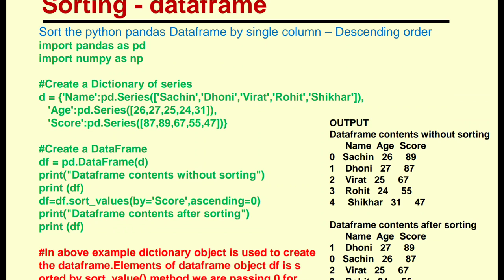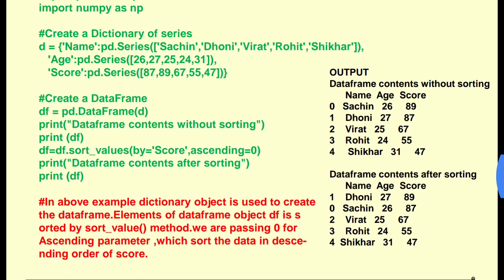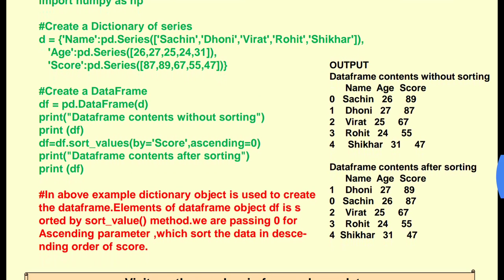Now df is equal to df.sort_values, with by equals to 'score', comma ascending equals to 0. Close bracket. Print 'DataFrame contents after sorting', then print df.